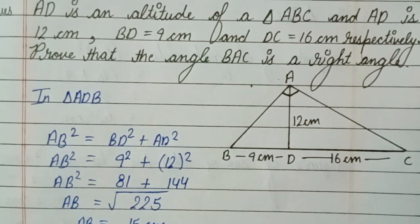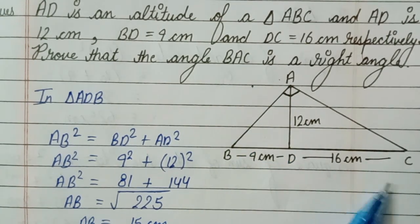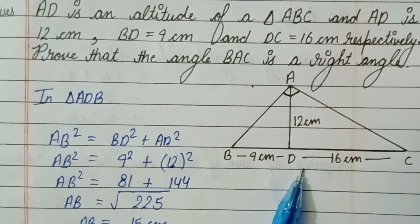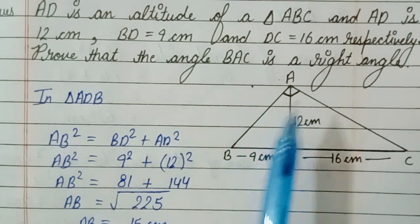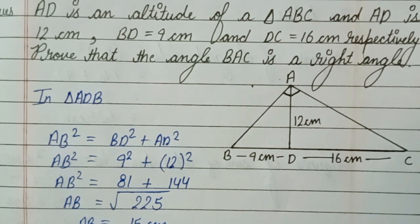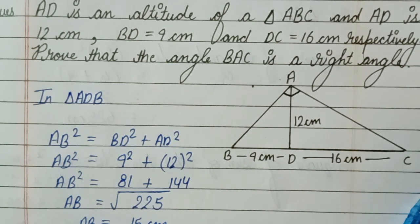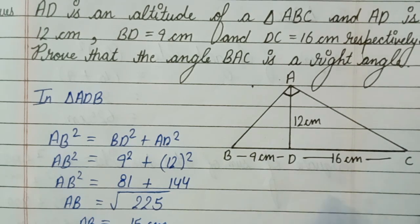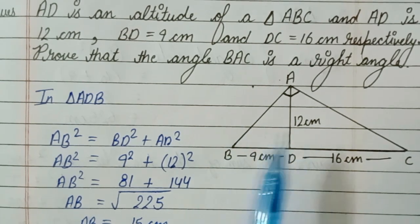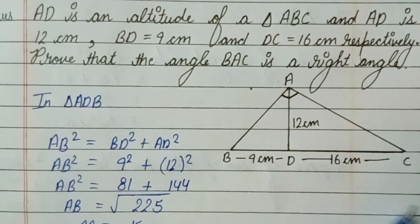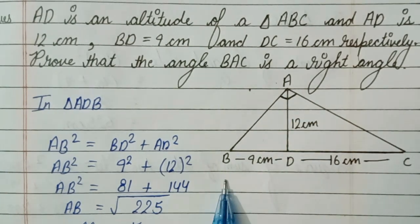Let's understand the question once more. We have a triangle with altitude AD given, where AD is 12 cm, BD is 9 cm, and DC is 16 cm. We have to prove angle BAC equals 90 degrees. If angle BAC is 90 degrees, then BC is the hypotenuse, so AB square plus AC square must equal BC square.